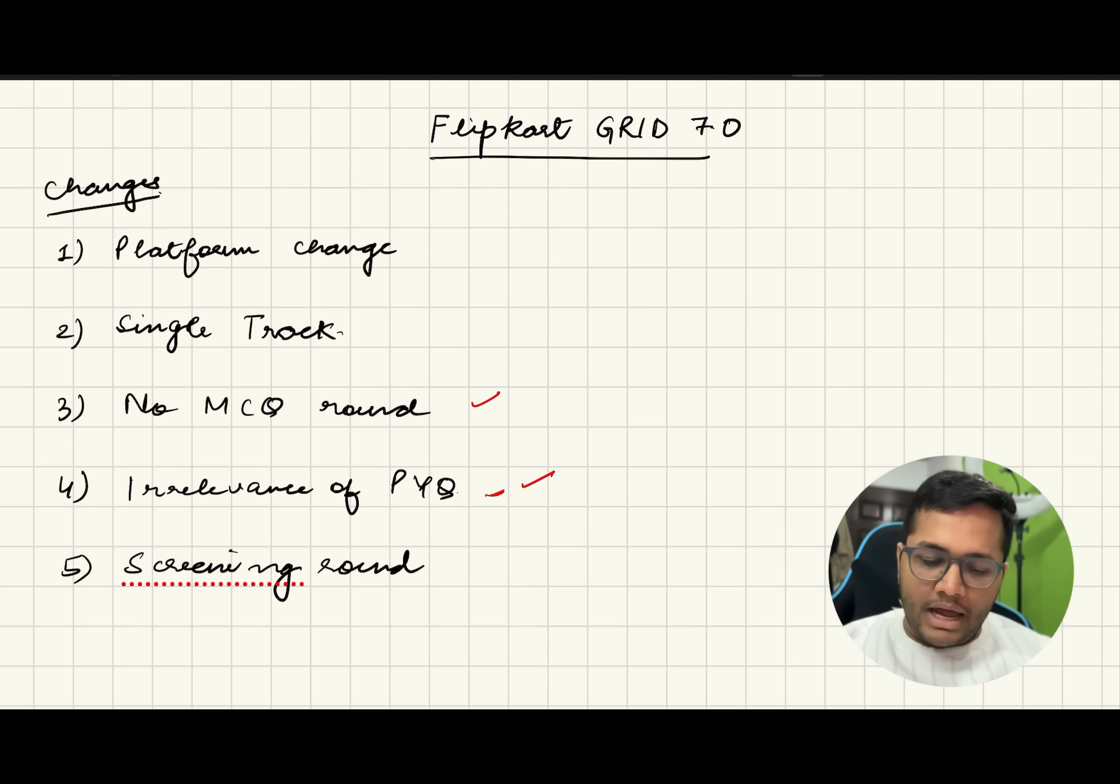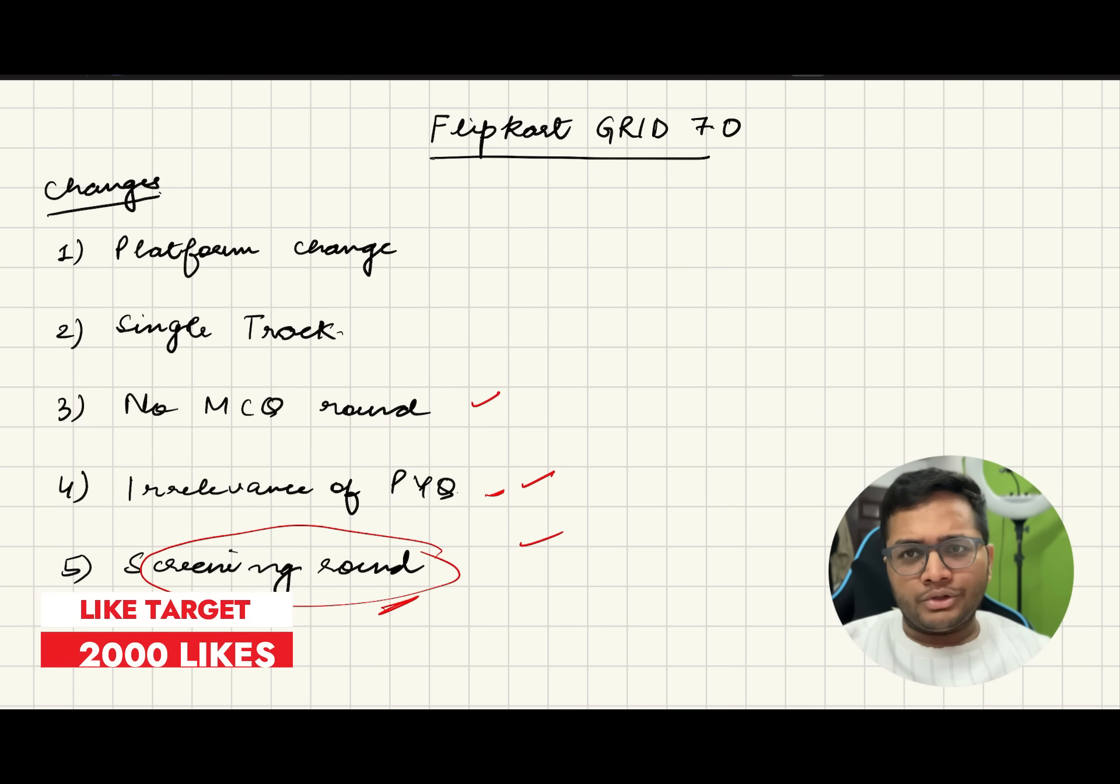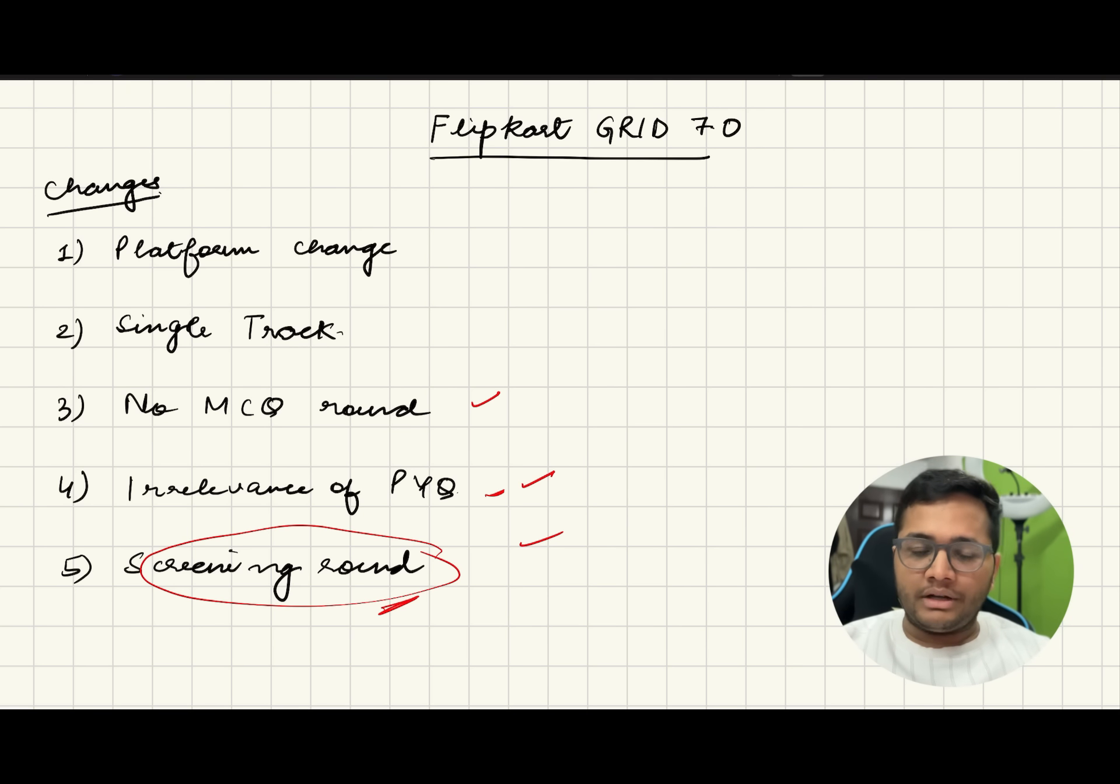There is a screening round that is added. So earlier, what used to happen is everyone and anyone who used to register was able to get the first test link. But this time there's a screening, so only a few selected of you would be given a chance to give this test. So there's a screening round added.